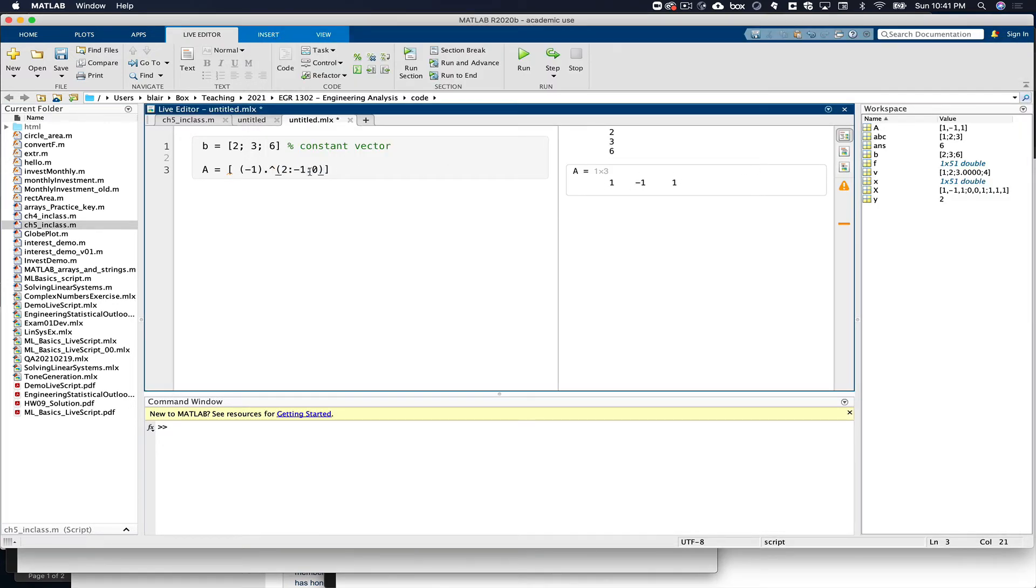And then we do the same thing for the next specific value of x equals 0. So next line will be 0 raised to the various powers. And I should probably put in a dot, dot, dot so that MATLAB knows I'm continuing the command to the next line. Same thing here.